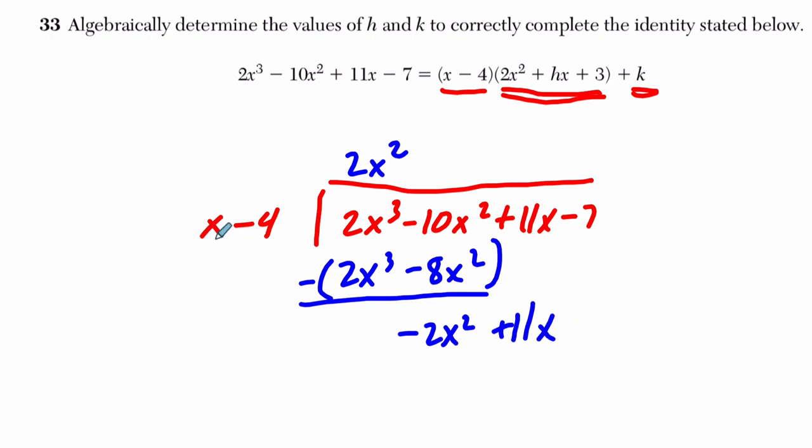How many times does this x go into negative 2x? You just do negative 2x. Negative 2x times x is negative 2x squared, and negative 2x times negative 4 is positive 8x. Subtract, see what's left over. This is just basic polynomial long division. These terms cancel, and this is 3x. Bring down our negative 7.